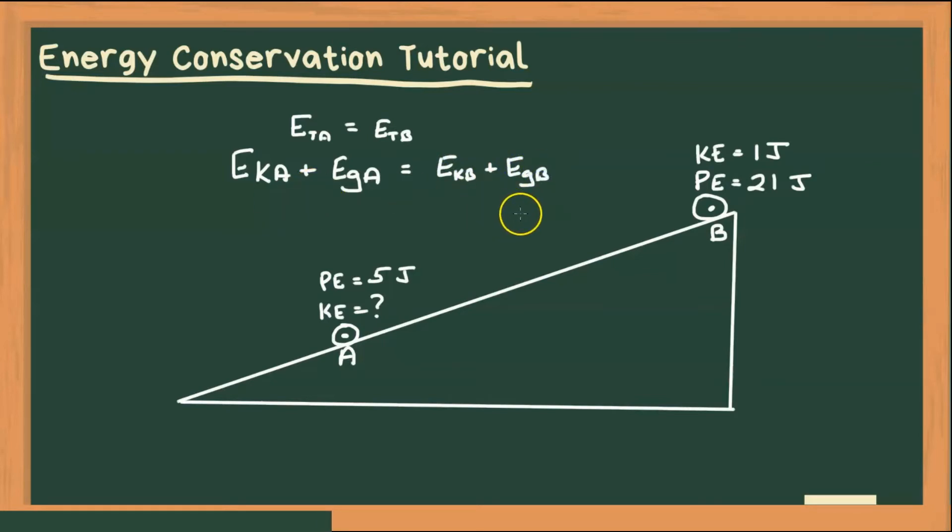And now we're just going to substitute what we know and solve for what we don't. So I don't know the kinetic energy at A, so I'm just going to leave that as a variable. But I know the gravitational is 5 joules. And I know the kinetic and gravitational at B, so it's 1 joule plus 21 joules.